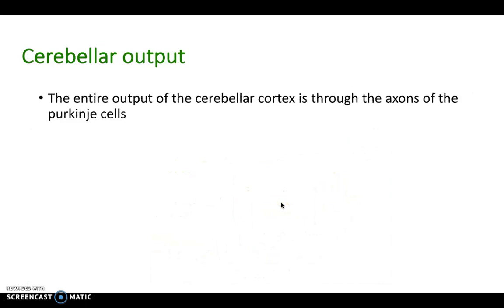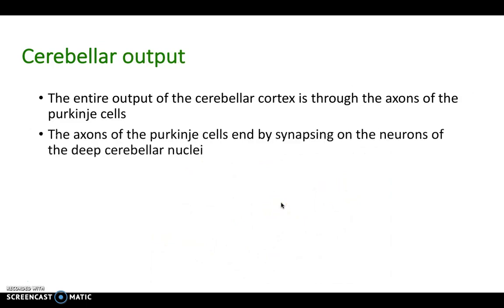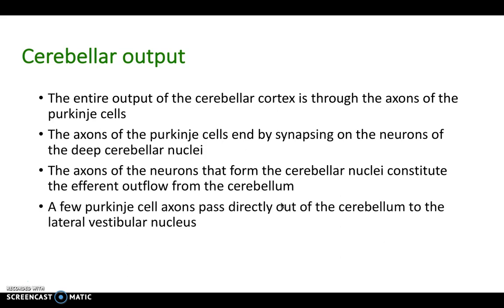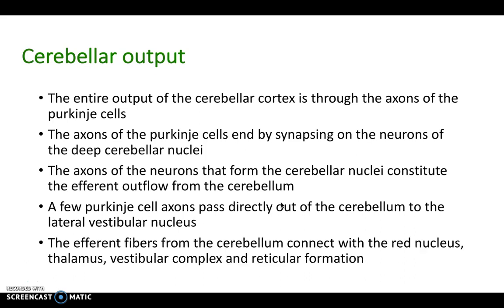In terms of cerebellar output, the entire output is through the axons of the Purkinje cells, which end by synapsing on the neurons of the deep cerebellar nuclei. The axons of those neurons constitute the efferent outflow from the cerebellum, and a few Purkinje cell axons pass directly to the lateral vestibular nucleus. The efferent fibers from the cerebellum connect with the red nucleus, thalamus, vestibular complex, and reticular formation. Take it step by step to understand the outputs of the cerebellum.